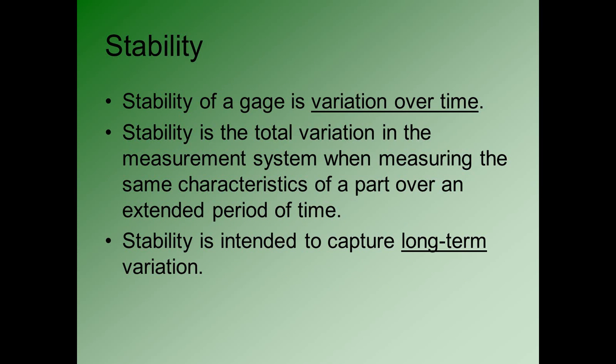Stability is the variation in the gauge over time. We expect gauges are going to change over time — that's one of the reasons why there has to be a calibration schedule, because typical measurement instruments only hold their level of low bias over a period of time. Stability captures longer-term variation, like variation over days, weeks, or months, not over minutes.